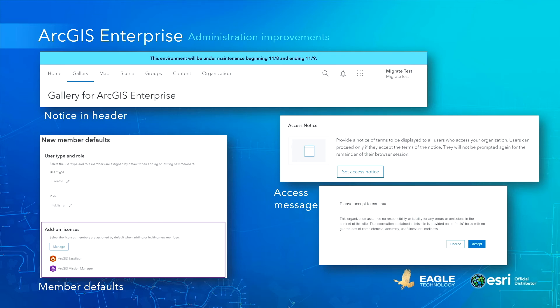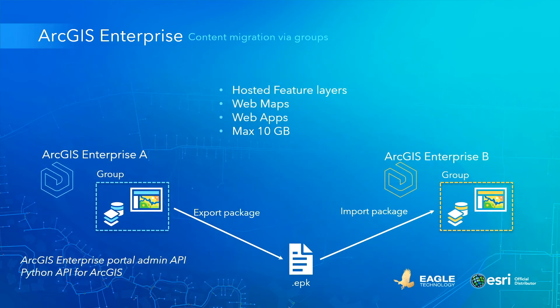Another major new capability is that you can use groups to migrate content between RGS Enterprise deployments, like dev, test, and prod environments. It allows you to export all content from a group as a file and import that file into another deployment, maintaining item IDs and updating the service URLs.